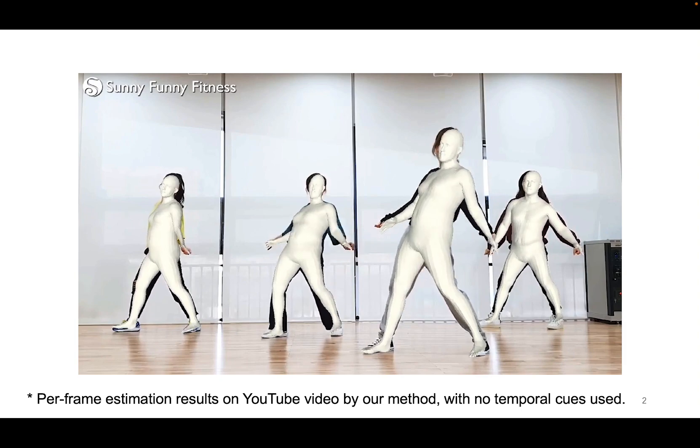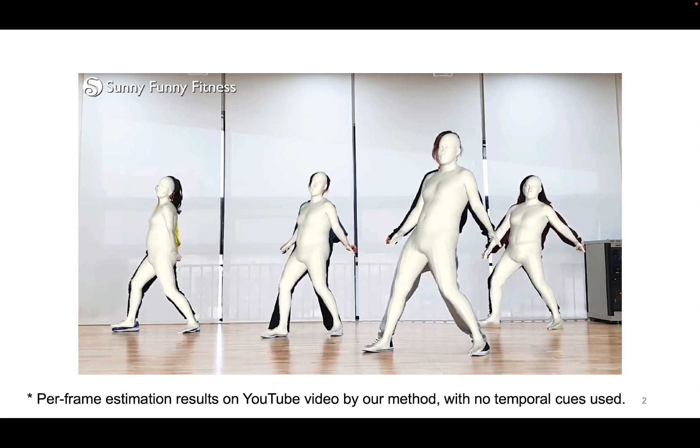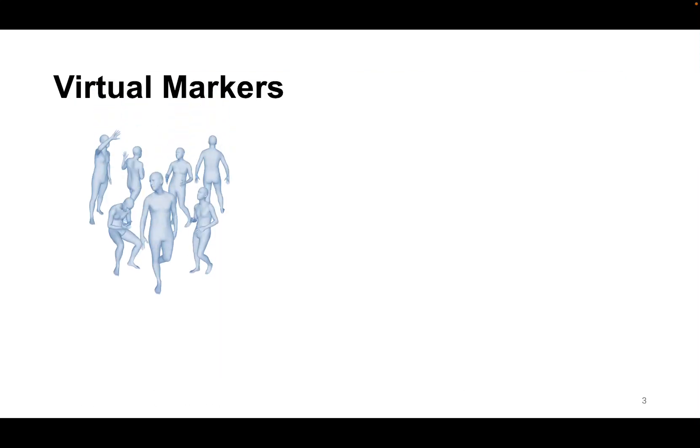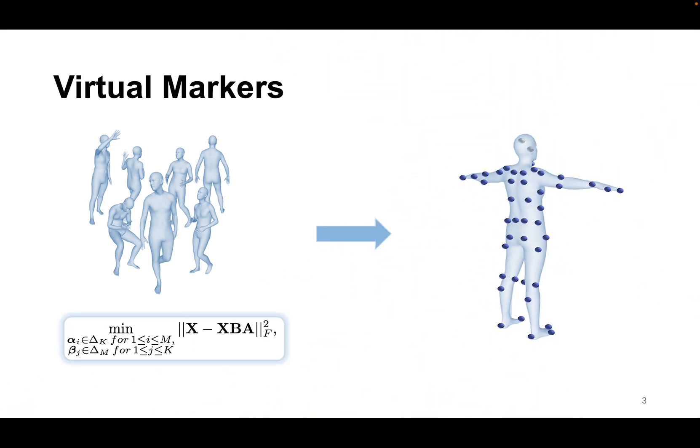The core of our approach is a novel intermediate representation named virtual markers, which learns 64 landmark keypoints on the body surface based on large-scale mocap data, mimicking the effects of physical markers. The virtual markers can be accurately detected from wild images and can reconstruct the intact meshes with realistic shapes by simple interpolation.